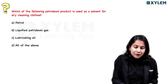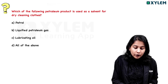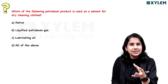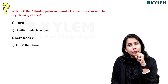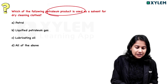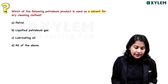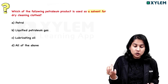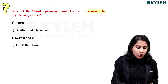Next question: Which petroleum product is used as a solvent for dry cleaning clothes? In this process, a petroleum product is used as a solvent for dry cleaning. The options include: Liquefied petroleum gas, Lubricating oil, All of the above.